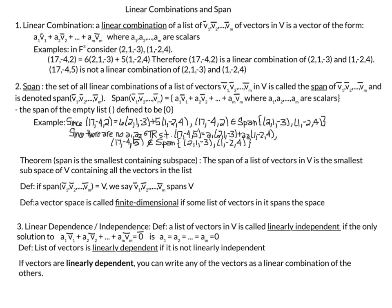The first definition we will look at is linear combination. If you have a list of vectors v1, v2, up to vn, then a linear combination is any vector of the form: a scalar multiple a1 times v1, plus a scalar multiple a2 times v2, all the way up to am times vm. These scalars a1 up to am can be equal to 0, equal to 1, or any other scalar.